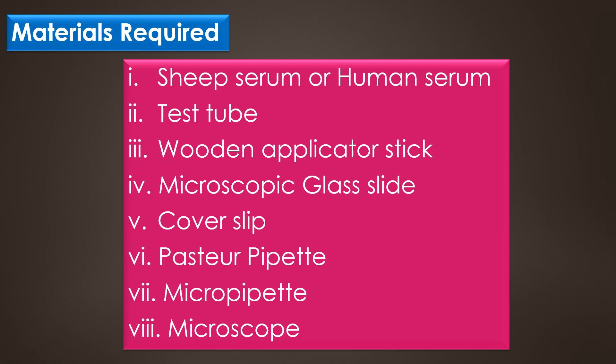The materials required for the germ tube test are sheep serum or human serum, test tube, wooden applicator stick, microscopic glass slide, coverslip, Pasteur pipette, micropipette, and microscope.